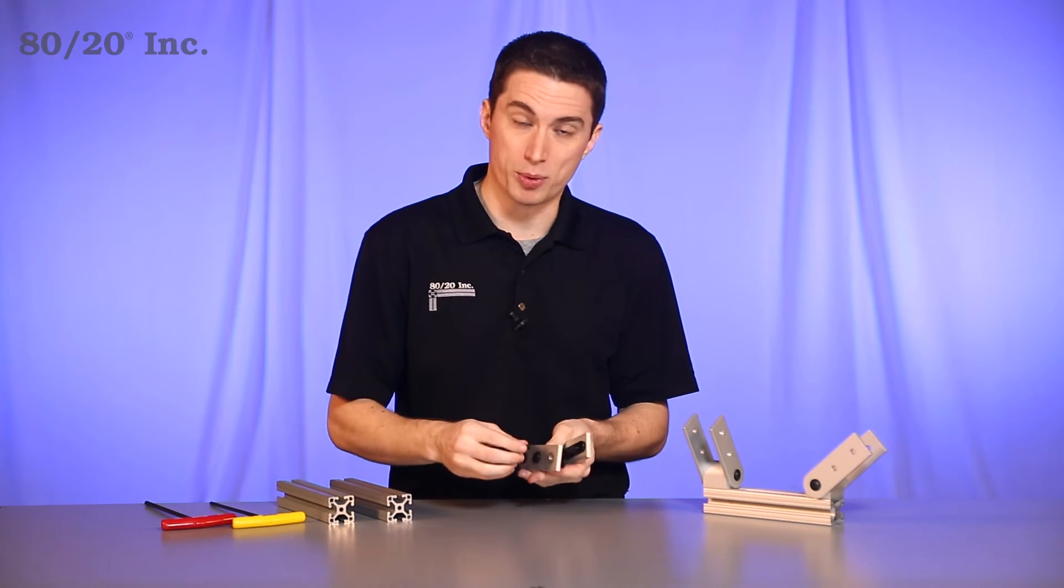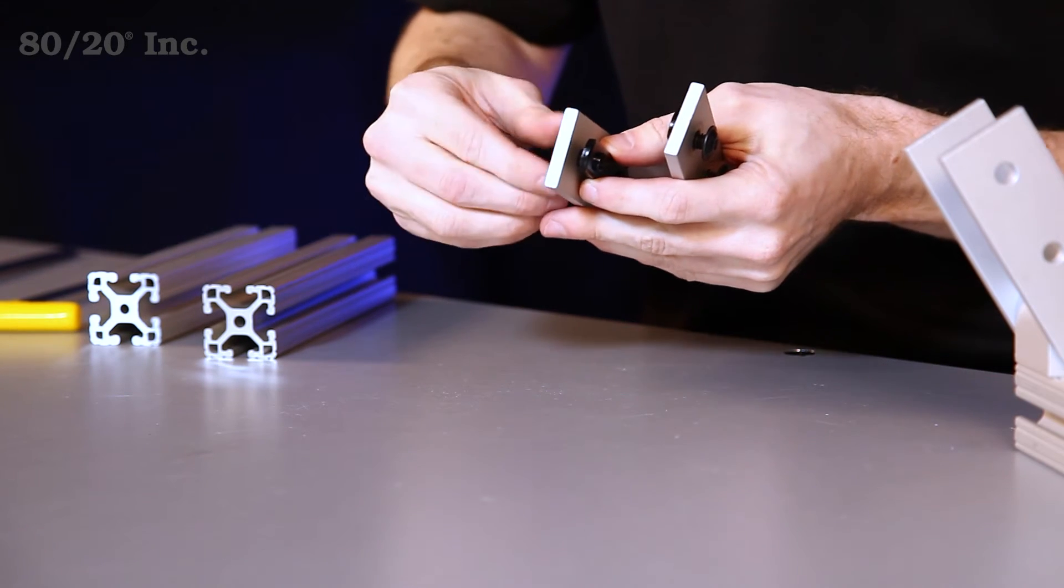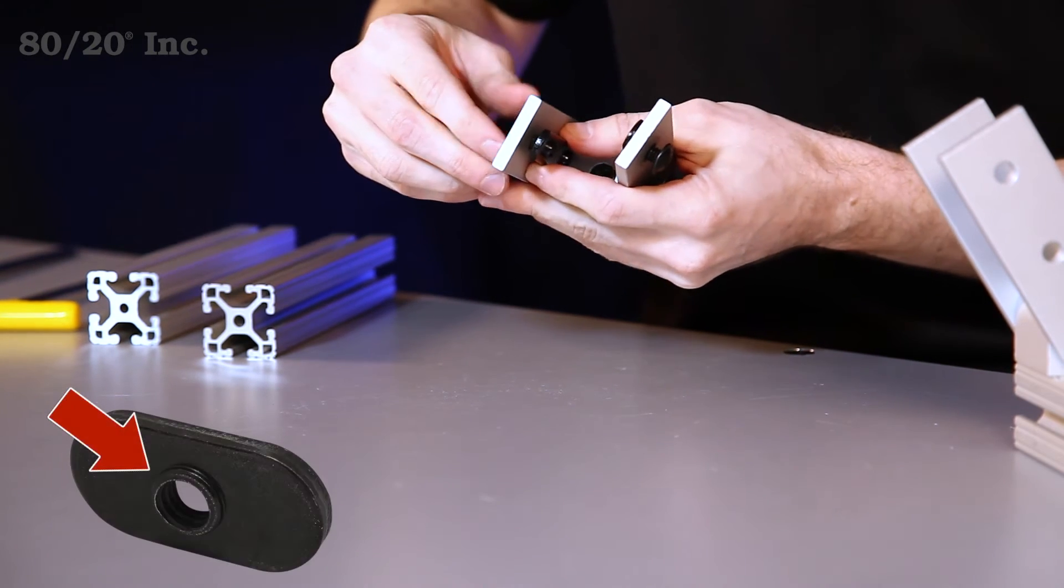Now the first thing I'm going to do is take the structural pivot and put one last bolt and one last T-nut into it. It's important to know when you're installing your T-nuts that the pilot projection facing downwards.